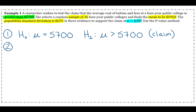Step two: find the p-value. We use a z-test because we're talking about averages and we're given the population standard deviation. In your calculator, go to STAT → TESTS → Z-Test. You might already be on Stats input mode. Fill in the parameters: mu-naught = 5,700; sigma = 659; x-bar = 5,950; N = 36.